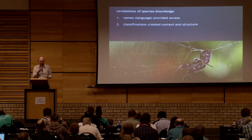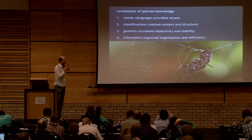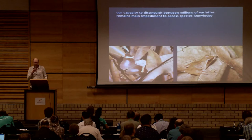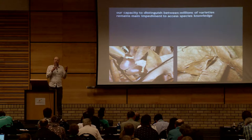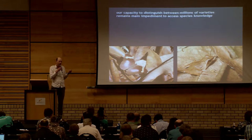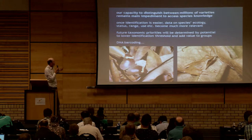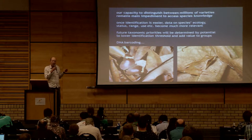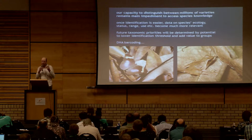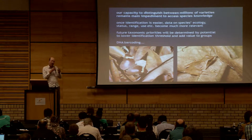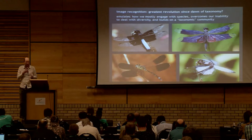Then came the two great recent innovations: genetics, which increased the objectivity and stability of that system, and informatics, which improved the organization and efficiency. But there always remained one big bottleneck — there are millions of species, and to access that knowledge through names and structure, you need to know what you have. It just boggles the mind to identify so many species. Once identification is easier, it becomes much more relevant to have all the other data. That's how you create your market — you have to have access first. There's more pressure on taxonomy, but priorities will really be which groups we can make accessible fast and which have added value. And now, beyond DNA barcoding, there's another development I'm very excited about.